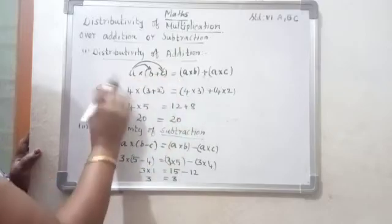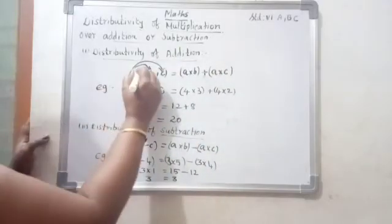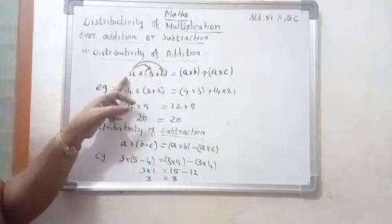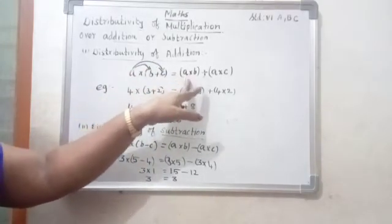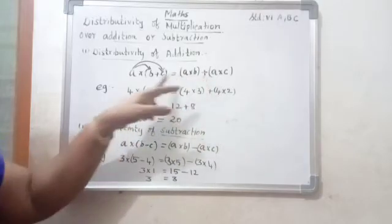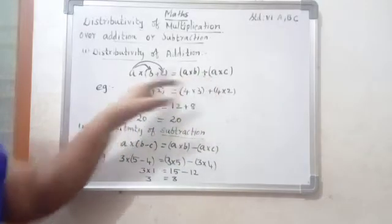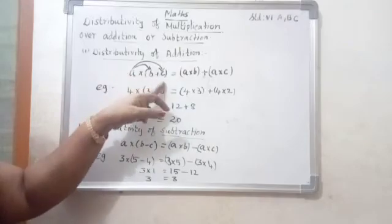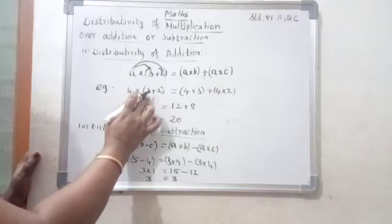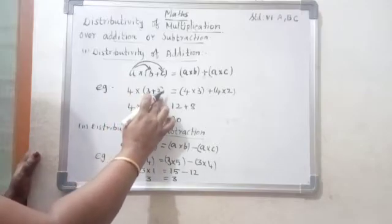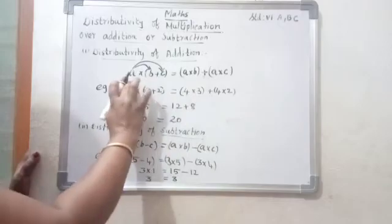Next, another product number: A into C. So the formula expands A times the bracket to A into B, then plus, then A into C. Example: 4 into 3 plus 2. Given this number, what is the form? How do we expand it using the formula?